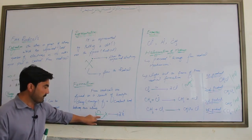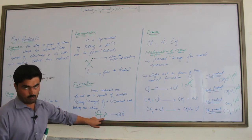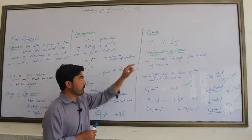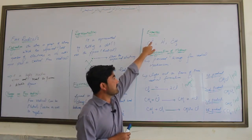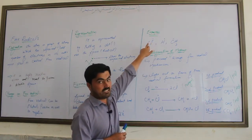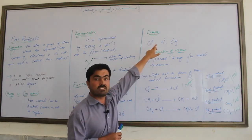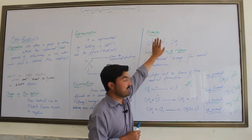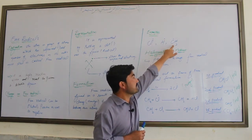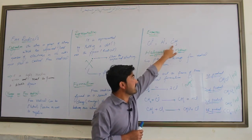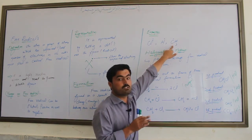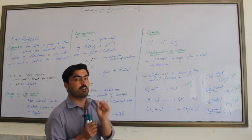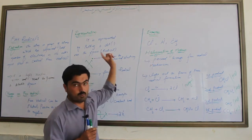In bond breaking notation, a half arrow represents the transfer of one electron. Examples of free radicals include: chlorine radical (Cl), hydrogen radical (H), and methyl radical (CH3). Groups of atoms can also have unpaired electrons and become free radicals.